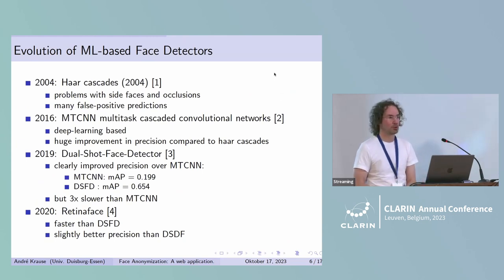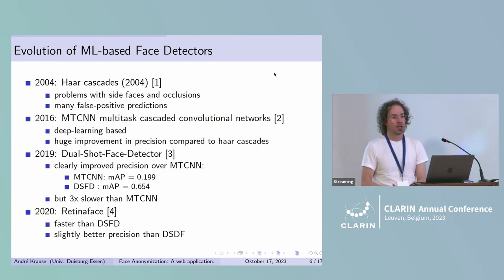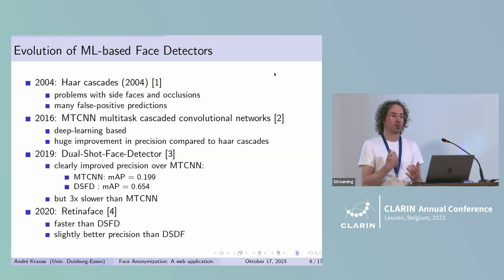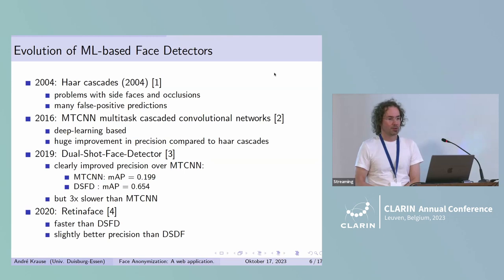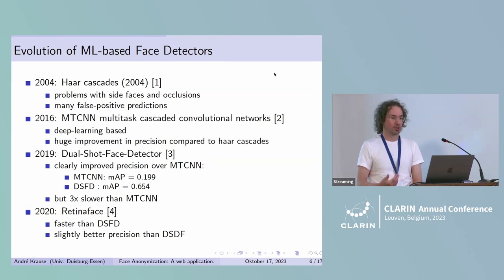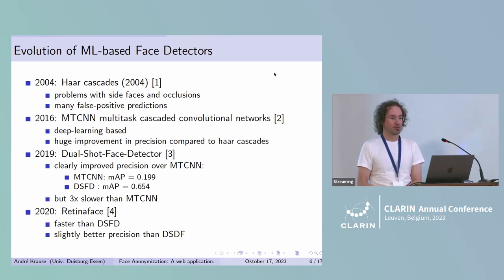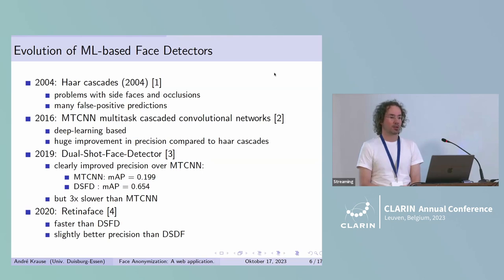A very brief history of the evolution of machine learning-based face detectors: In 2004, HAAR cascades had problems with faces filmed from the side and with partially occluded faces, and also produced many false positive detections. Then in 2016, MTCNN was a deep learning-based face detector — a huge improvement over HAAR cascades in precision. In 2019, an even better detector called the dual-shot face detector showed clear improvement over MTCNN. In 2020, RetinaFace became openly available — faster than the dual-shot face detector and with slightly better precision.